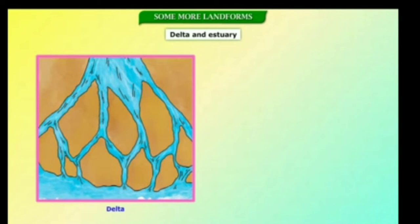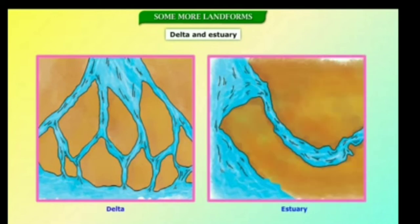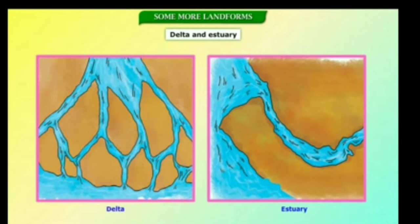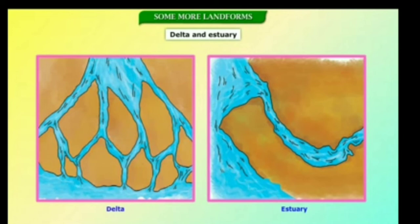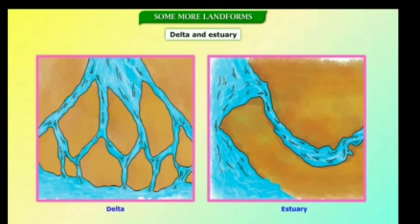Before entering the sea or any other water body, the silt carried by the river stops its flow. This causes the river to break up into many small outlets and spread over a wider area known as a delta. Sometimes, the river flows directly into the sea without dividing itself. This is called an estuary.